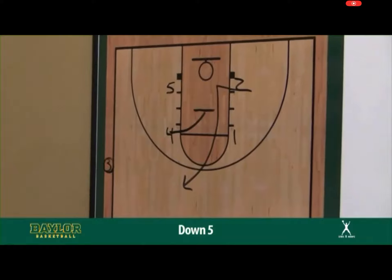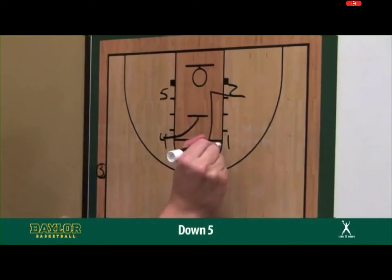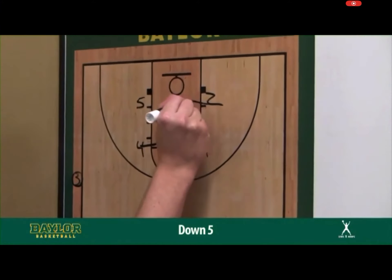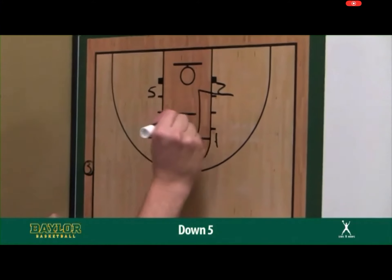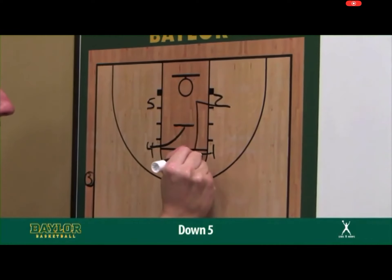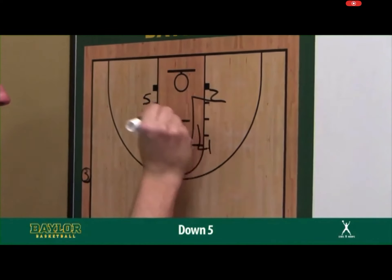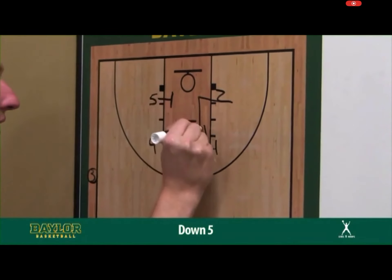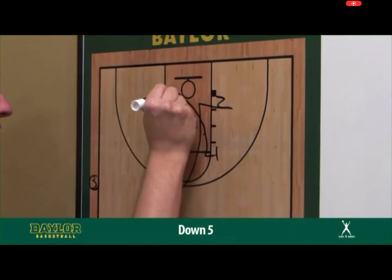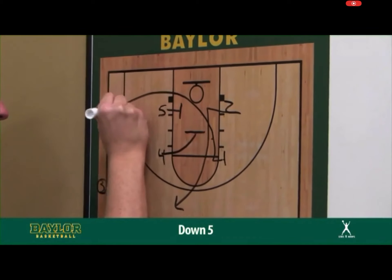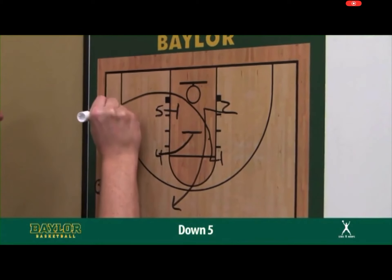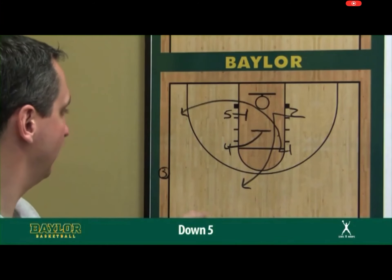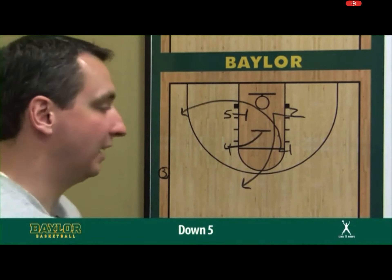As soon as that happens, the one — at the same point in time when the two's coming and the four are setting their screen — the one is coming and then setting up to come baseline off of five's baseline screen, looking for two different options to get a three.